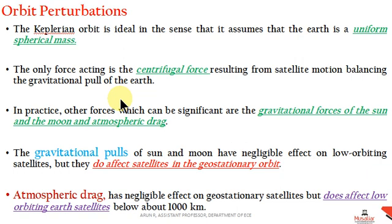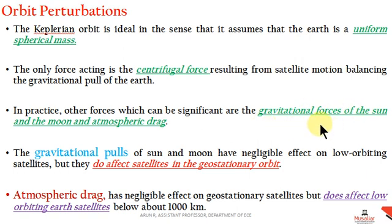But in practice, some other forces can be significant, such as gravitational forces of the Sun and Moon, atmospheric drag, and similar forces acting on the satellite. This results in changes or deviation from the regular values of some orbital parameters, and these effects are commonly termed as orbital perturbations.